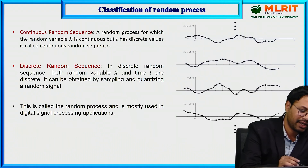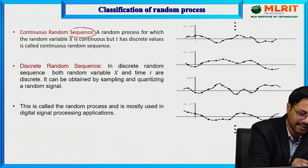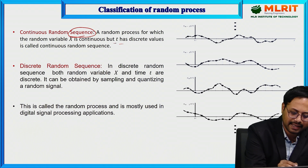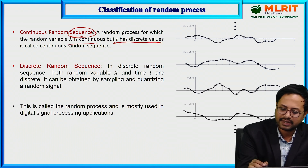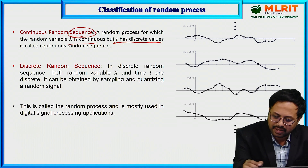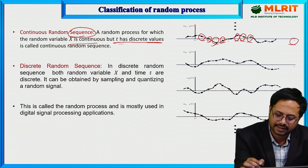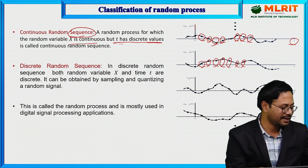The third type is continuous random sequence. In the sequence term, t must take discrete values, but X is continuous. You can check that t takes only discrete instances, while X is continuous. For any signal, only discrete instances of t are taken, and X is continuous.